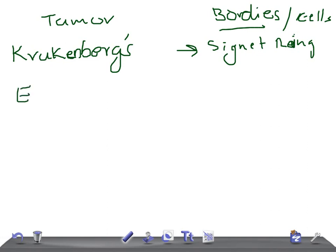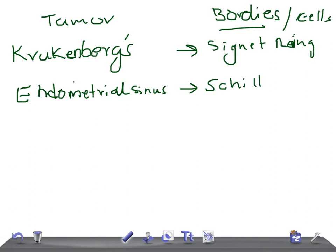Endodermal sinus tumor. What type of bodies do you see? The answer is Schiller-Duval bodies. Excellent!